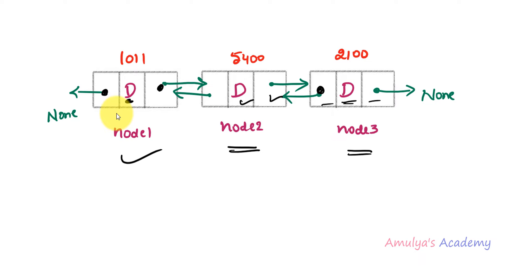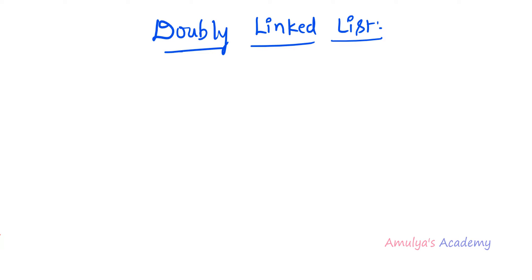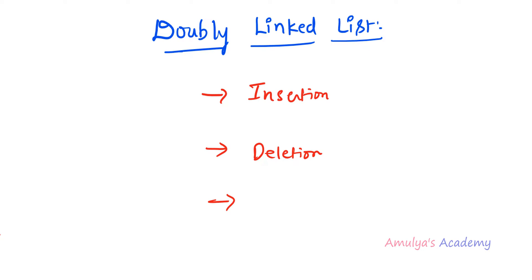The first node reference is stored in the head, which is the starting point of the linked list, and sometimes the last node is called the tail. Next, let's see its operations. Like the singly linked list, we will discuss three operations: insertion (adding nodes), deletion (removing nodes), and traversal (going through each node and printing the data of each node).